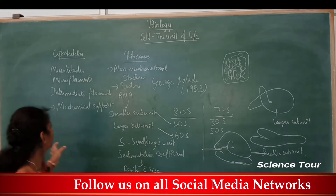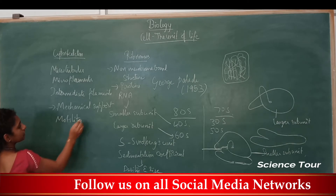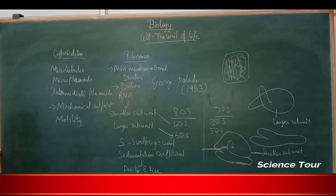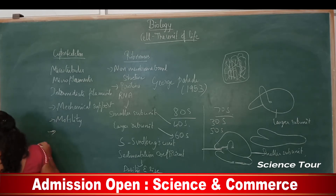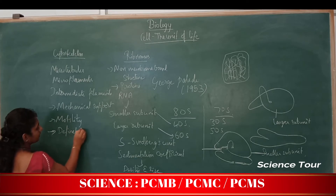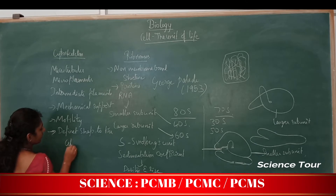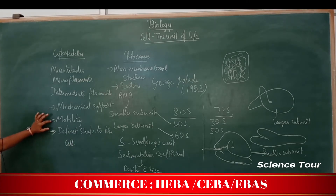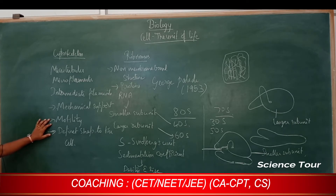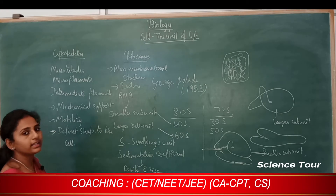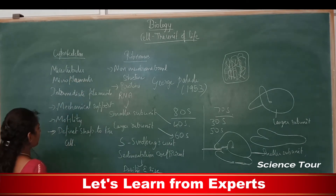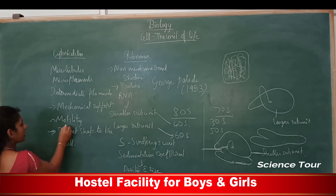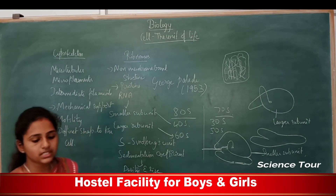The cytoskeleton helps with motility — some microtubules come out of the cell and help with movement. It also gives a definite shape to the cell. These are the main functions of the cytoskeleton.